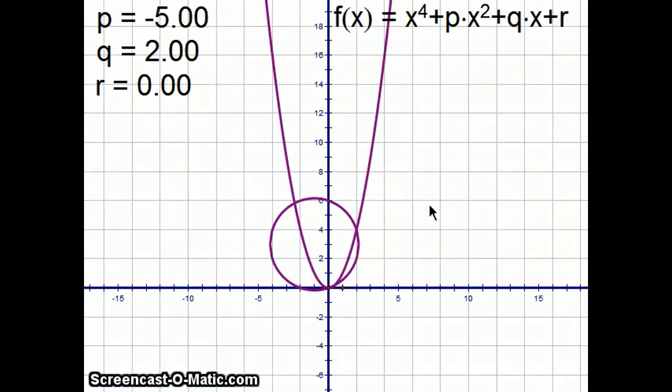This process also works for depressed cubics. That's something like x cubed minus 5x plus 2 equals 0. The trick, then, is to multiply everything through by x. And you end up with a depressed quartic with no constant term. And as you can see, when I graph that one, I end up with four intersection points.